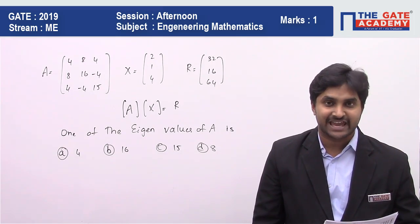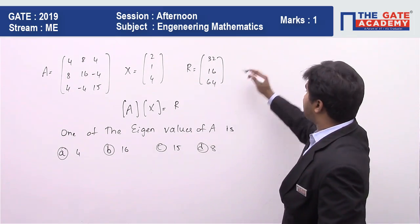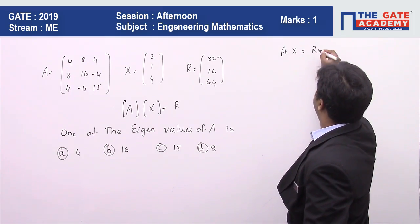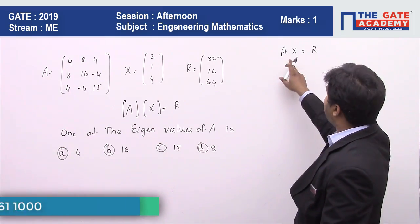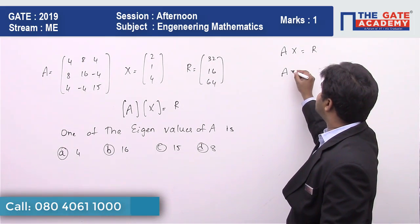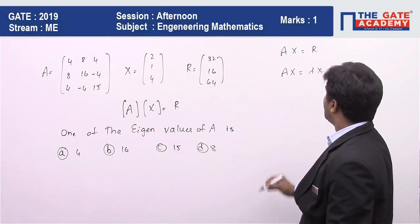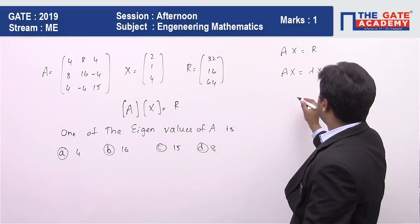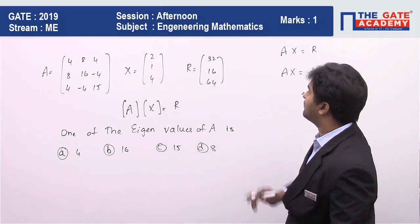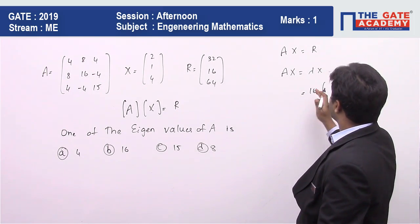The given matrix equation is Ax = r. We know whenever x is an eigenvector, it will satisfy Ax = λx. Now, please check what r is — r can be written as 16 times a column vector. If we take 16 as common from this column,